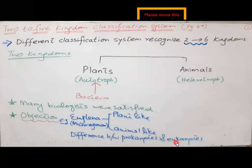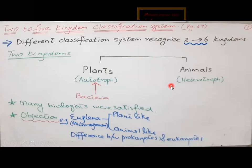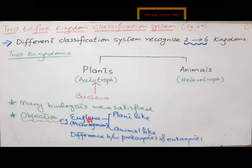Objection number two is that the two kingdom system does not explain the difference between prokaryotes and eukaryotes. So if there is a short question about the two kingdom system, you can write that this is the system consisting of two categories — bacteria included in the plants — and state the objections: the example of Euglena, and the issue of prokaryotes and eukaryotes.